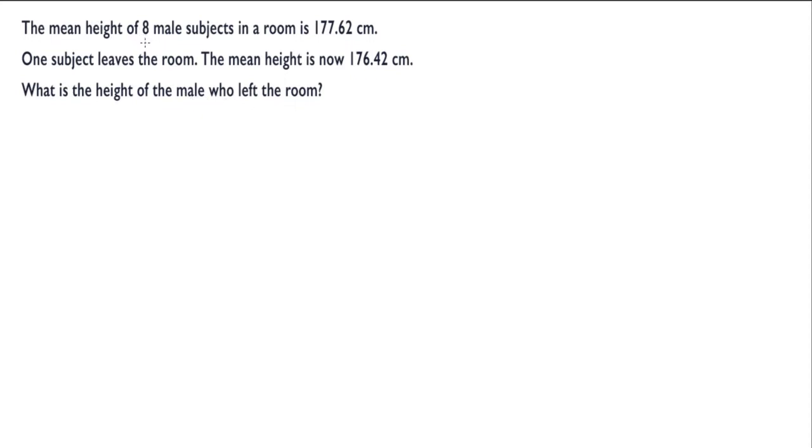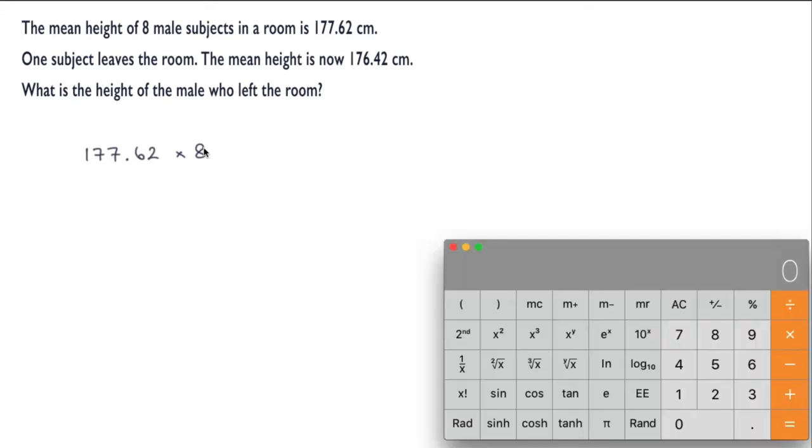Now what we need to do here is to find the total height of all of those males. In other words we're doing 177.62 multiplied by 8. Let's bring in the calculator, we've got 177.62 multiplied by 8. That gives us an answer of 1420.96.